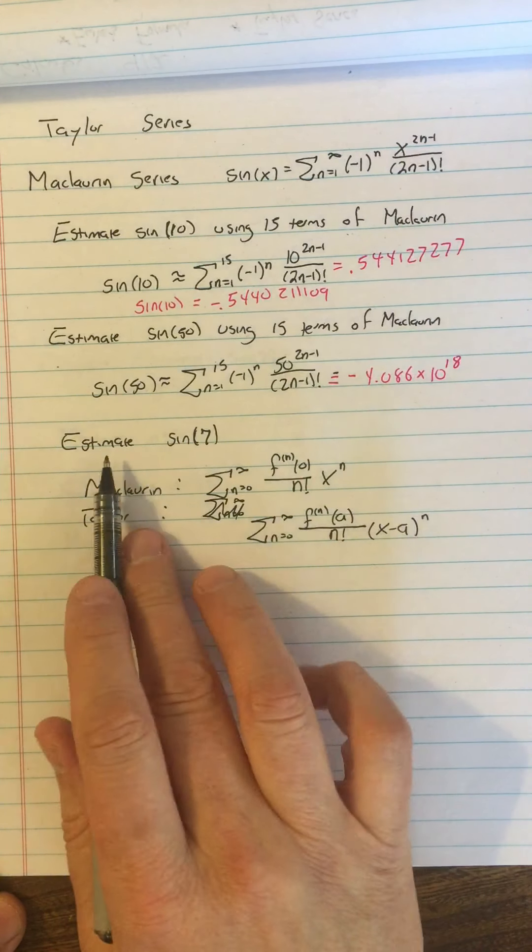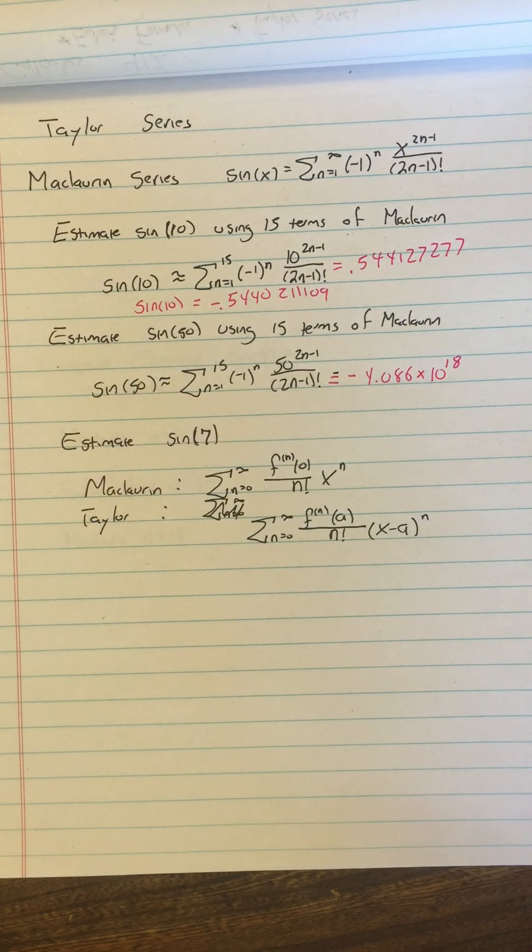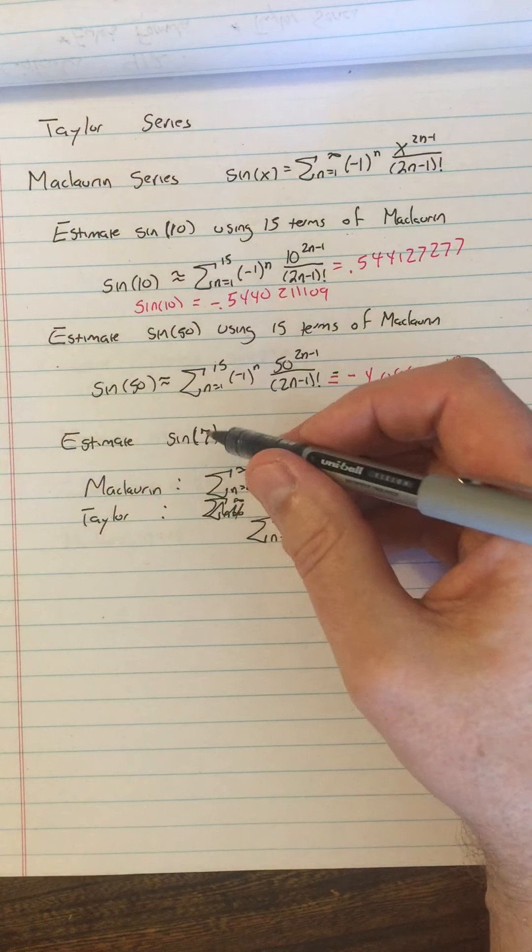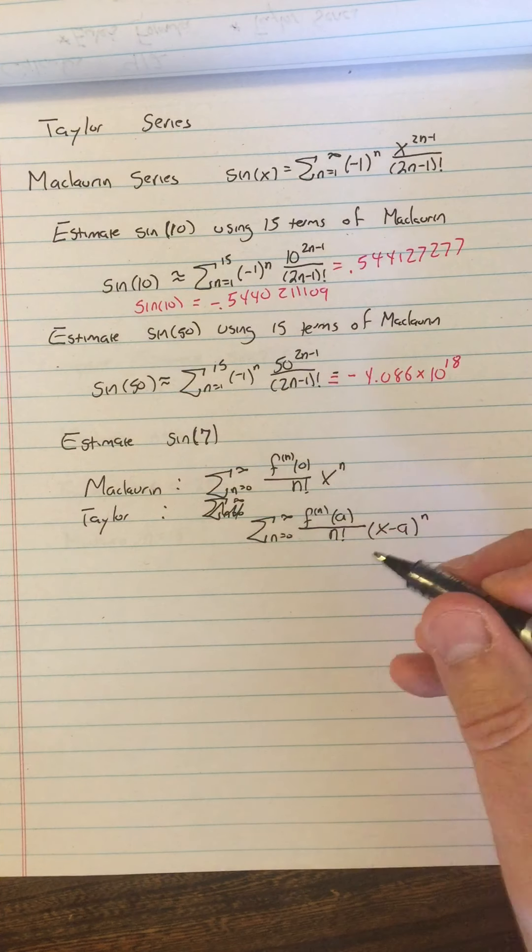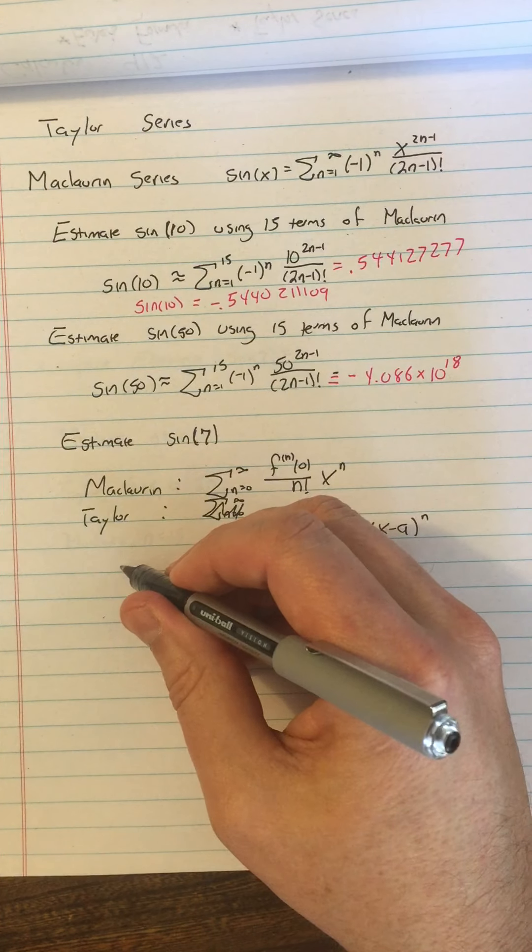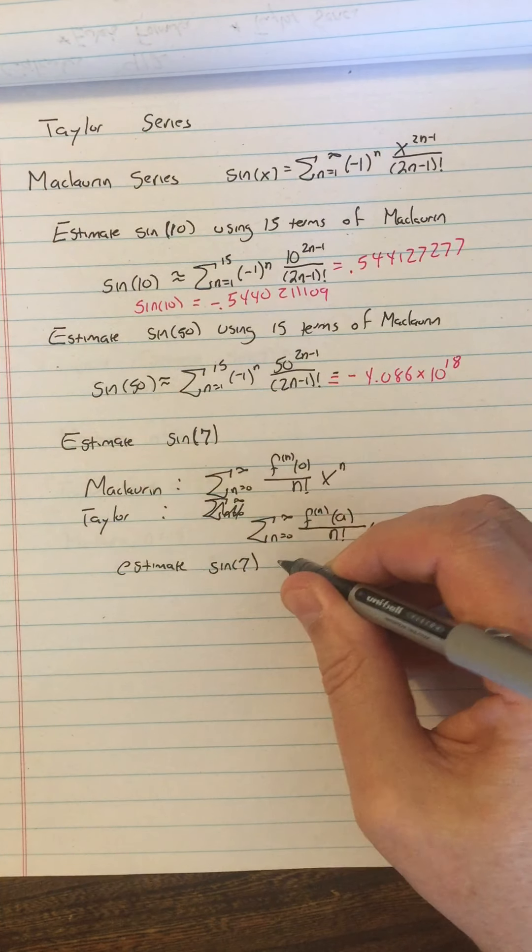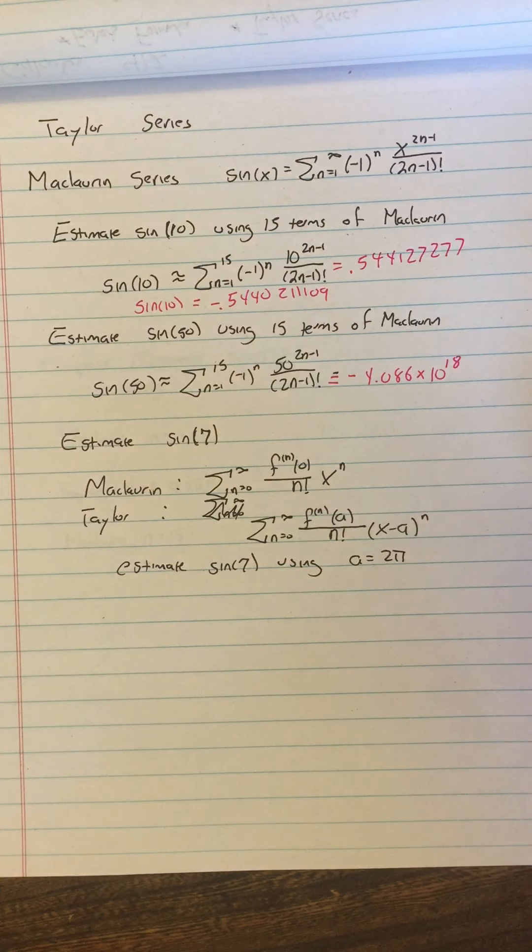So if we wanted to estimate sine of 7, what we'd do is we'd choose a to be a number whose sine we know that is close to 7, just like in linear approximations. So a value that I know that's close to 7 is 2π. I know the sine cosine of 2π. So we'll use, let's estimate sine of 7 using a equals 2π.